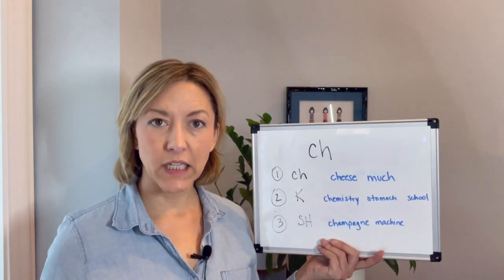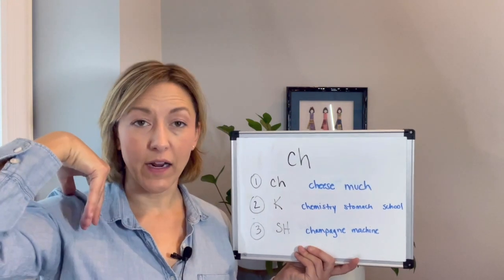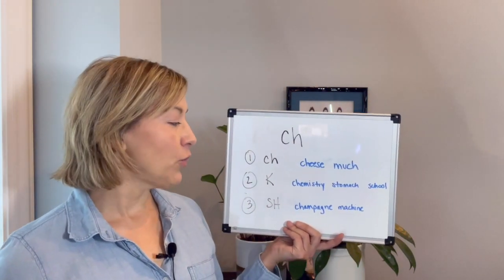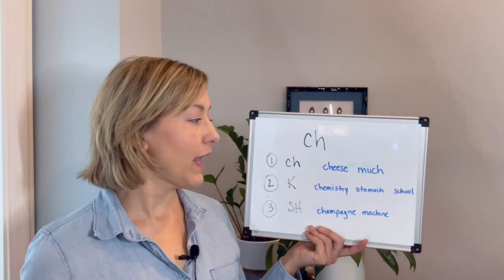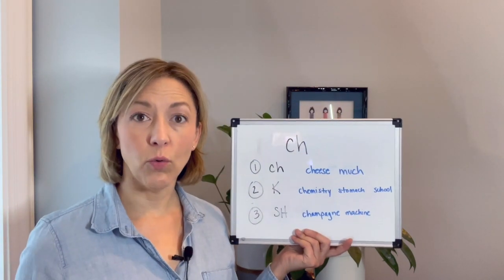Again, two letters are going to be one sound, the K. To make a K sound, tip of the tongue is low in the mouth, back of the tongue is pulled up, air just puffs out and we see this pattern in the word chemistry, stomach, and school.